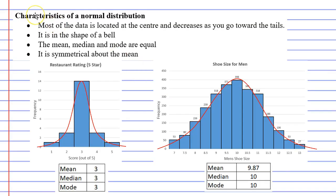We're going to conclude by talking about the characteristics of a normal distribution. We're basically going to revise everything we've learned. The first dot point says that most of the data is located at the center and decreases as you go toward the tail. So whenever we look at our bell curves, the center is the peak. And we see that most of our data is located at this point. Most people have a size 10 shoe for the men.